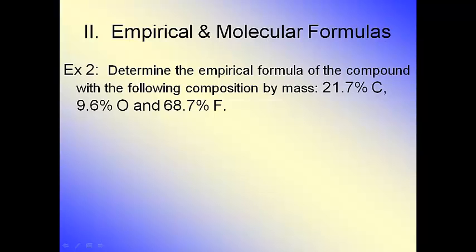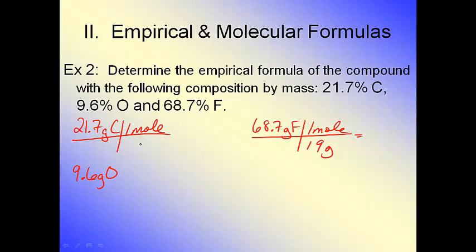It says determine the empirical formula of the compound with the following composition: 21.7% carbon, 9.6% oxygen, and 68.7% fluorine. The first thing I'm going to do is assume that those are all grams. So I'm going to say this is 21.7 grams of carbon, 9.6 grams of oxygen, and 68.7 grams of fluorine. I'm going to set up my mole conversion for each of them because when in doubt, mole it out. And I'm not going to touch my calculator because touching the calculator takes more time. Remember, round to two places past the decimal on the periodic table. Oxygen is 15.999, so that rounds to 16. Fluorine is 18.998, so that rounds to 19.